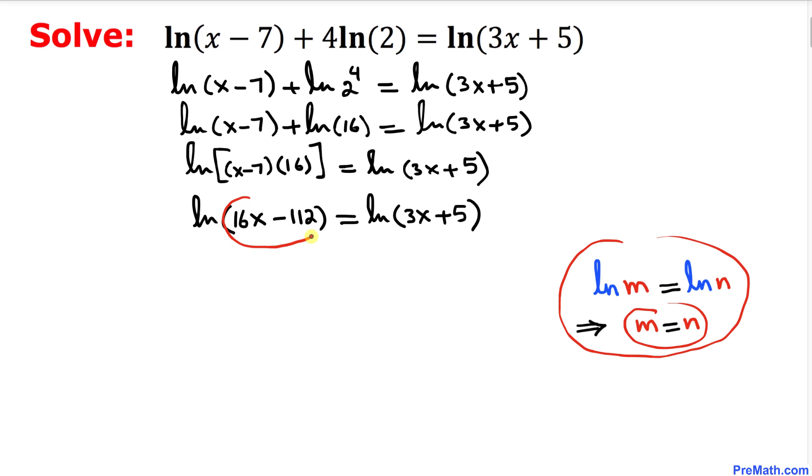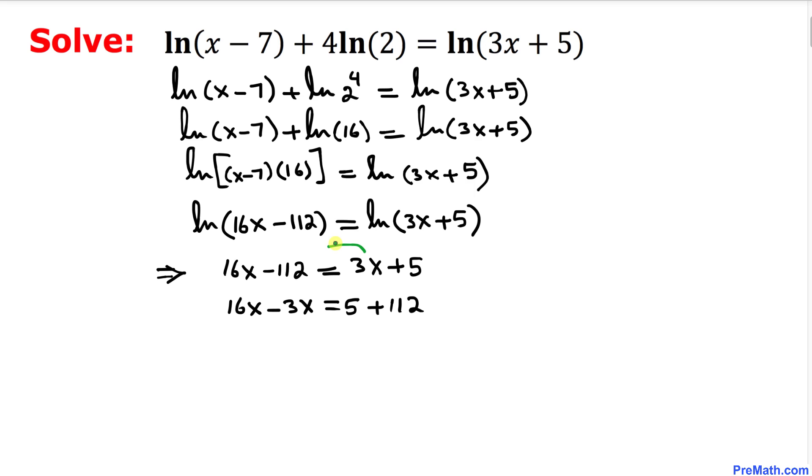This could be written as simply 16x minus 112 equal to 3x plus 5. In the next step I move this 3x on the left hand side and move this negative 112 on the right hand side.